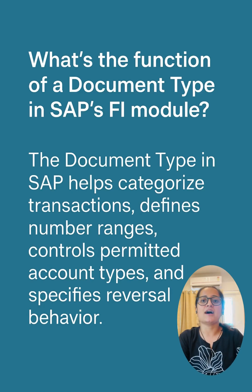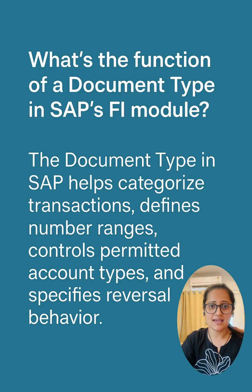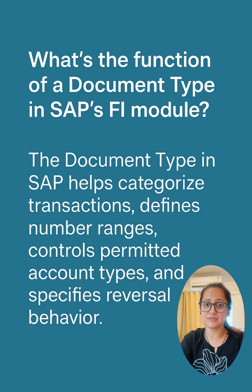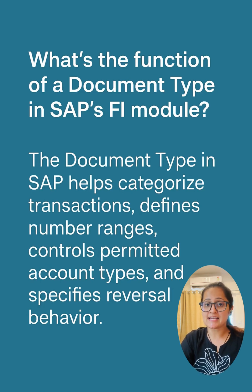Document types are two-character codes like SA, KR, and DR. As I have already mentioned in my long video, SA stands for a document type for GL, KR is for vendor invoice, and DR is for customer invoice.